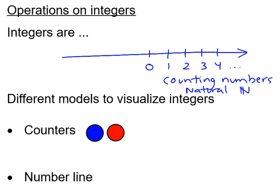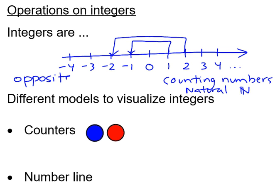But then to find the integers, we're going to find the opposite of these counting numbers. So the opposite of 1 is negative 1, the opposite of 2 is negative 2, and so on. So these are the opposite numbers of counting numbers. And all together, that makes our integers. And the symbol we use for integers is Z like this.